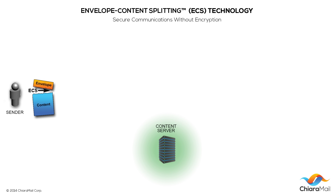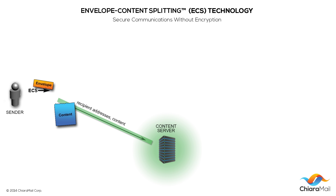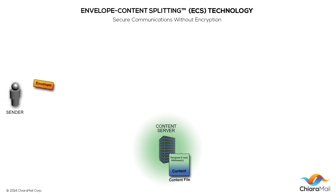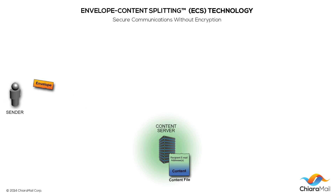The content, together with the recipient email addresses, are sent to a content server where it is securely stored in a content file and managed. The server returns to the sender's email client pointers to the content. The sender's email application then stores these pointers inside the email envelope together with the default mail message.